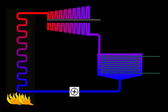Regenerative Rankine cycle. The regenerative Rankine cycle is so named because after emerging from the condenser, possibly as a subcooled liquid, the working fluid is heated by steam tapped from the hot portion of the cycle. On the diagram shown, the fluid at 2 is mixed with the fluid at 4 to end up with the saturated liquid at 7. This is called direct contact heating.